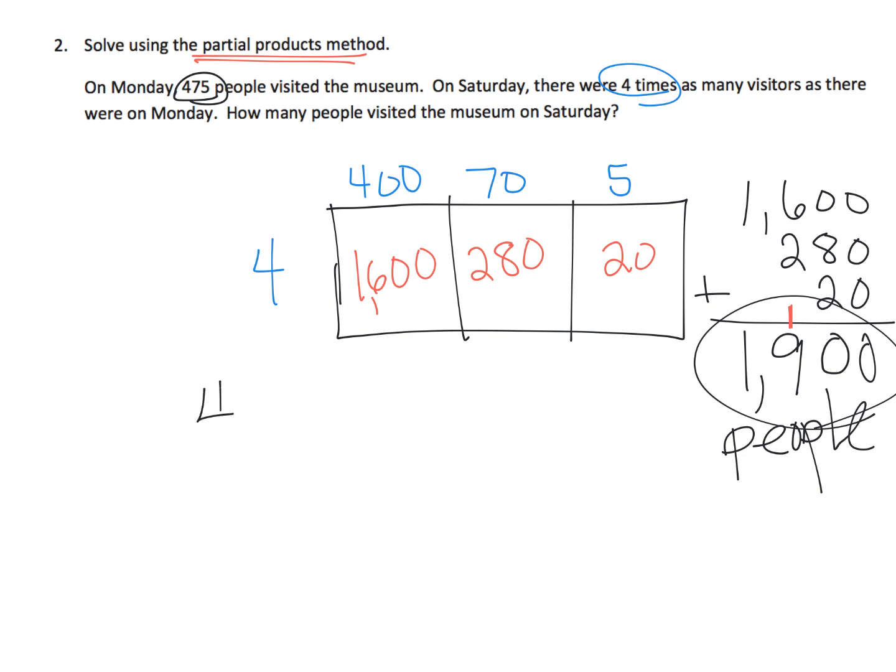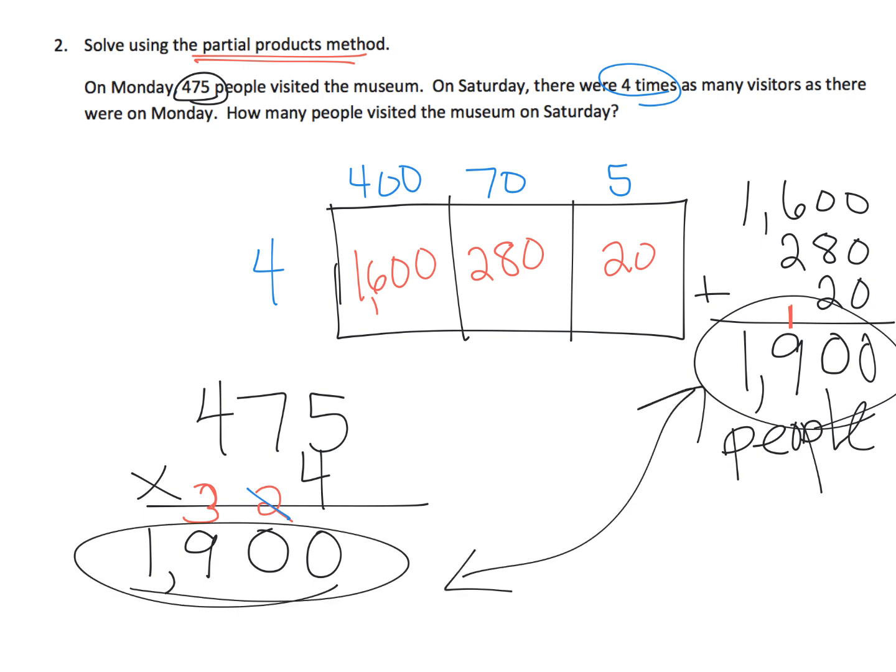Now if we wanted to see what the standard algorithm would look like, 475 times 4. 4 times 5 is 20. There's the 2, there's the 0. 4 times 7 tens is 28 tens, but don't forget, that's 28 tens plus the 2, so that's 30 tens. So I'm going to put a 3 and a 0. And then 4 times 400 is 1,600 plus 3, so that's 1,900. And there's our answer. Same exact answer over here. So students have a choice here. The area model or the standard algorithm.